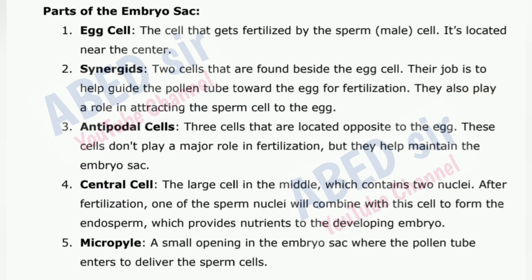Parts of the embryo sac: 1. Egg cell — the cell that gets fertilized by the sperm cell. It is located near the center. 2. Synergids — cells that are found beside the egg cell. Their job is to help guide the pollen tube toward the egg for fertilization. They also play a role in attracting the sperm cell to the egg.